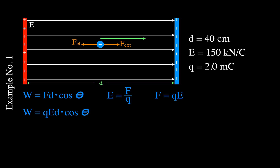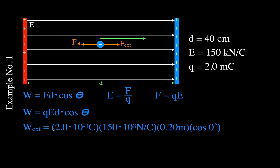Theta is the angle between the force vector and the displacement vector. For the external force calculation, the displacement is 20 centimeters — 0.2 meters — to the right. The external force also points to the right, so we're calculating work with the cosine of theta, where theta is 0 degrees.